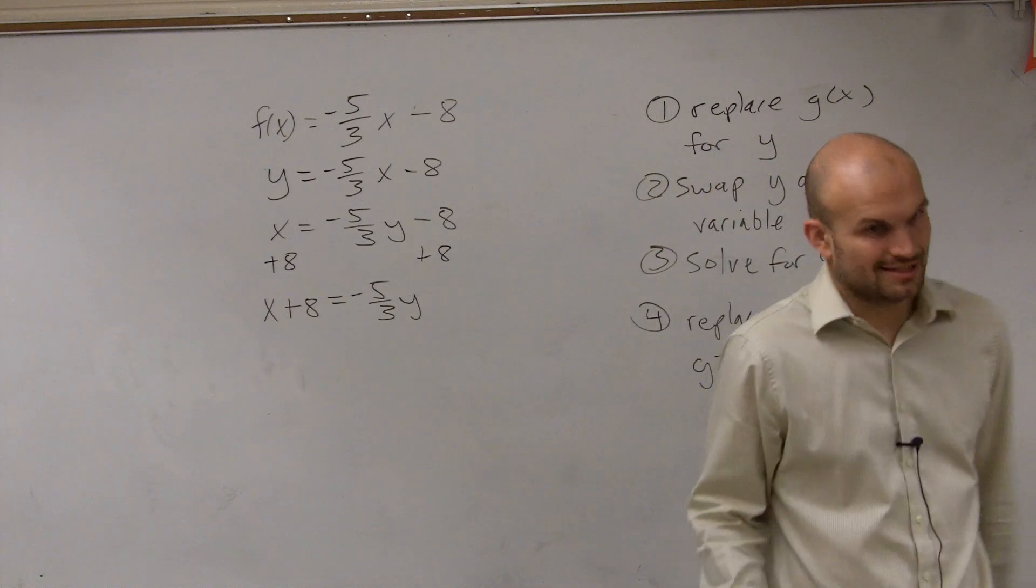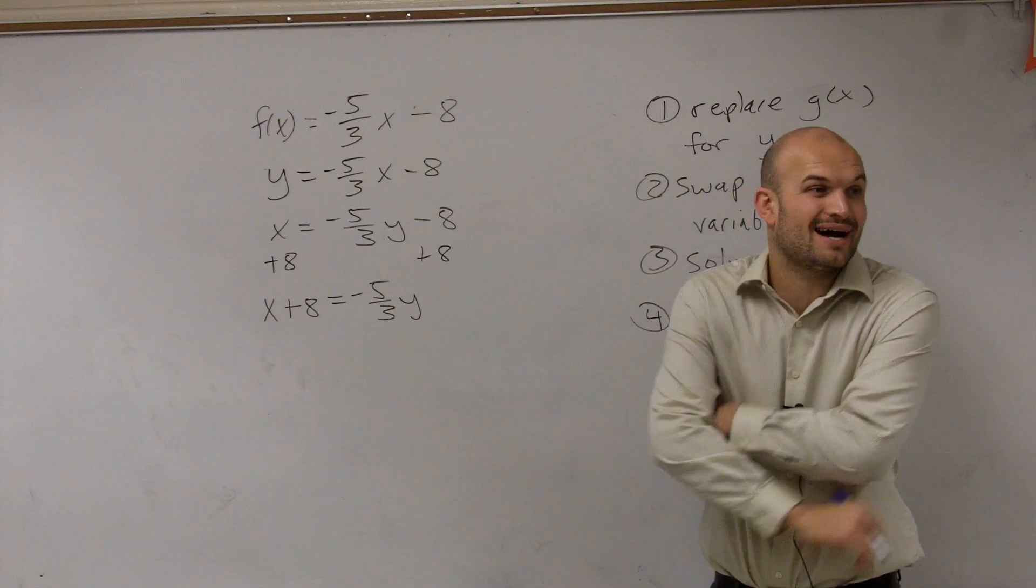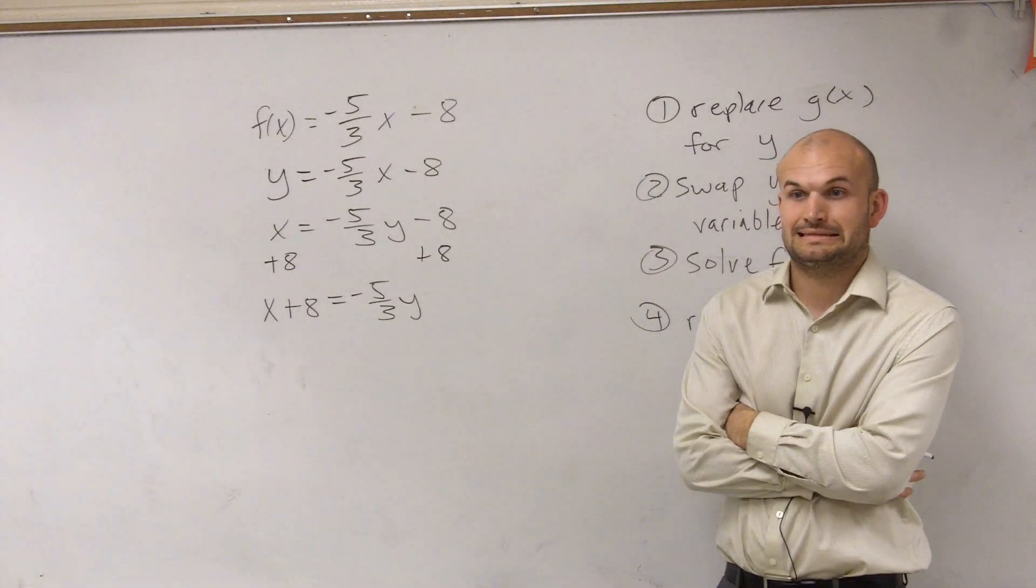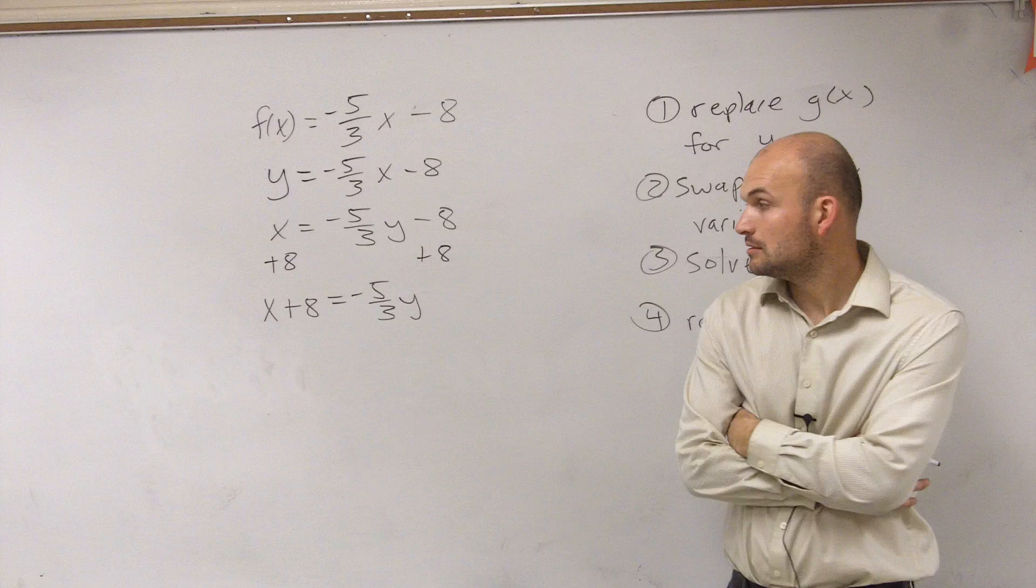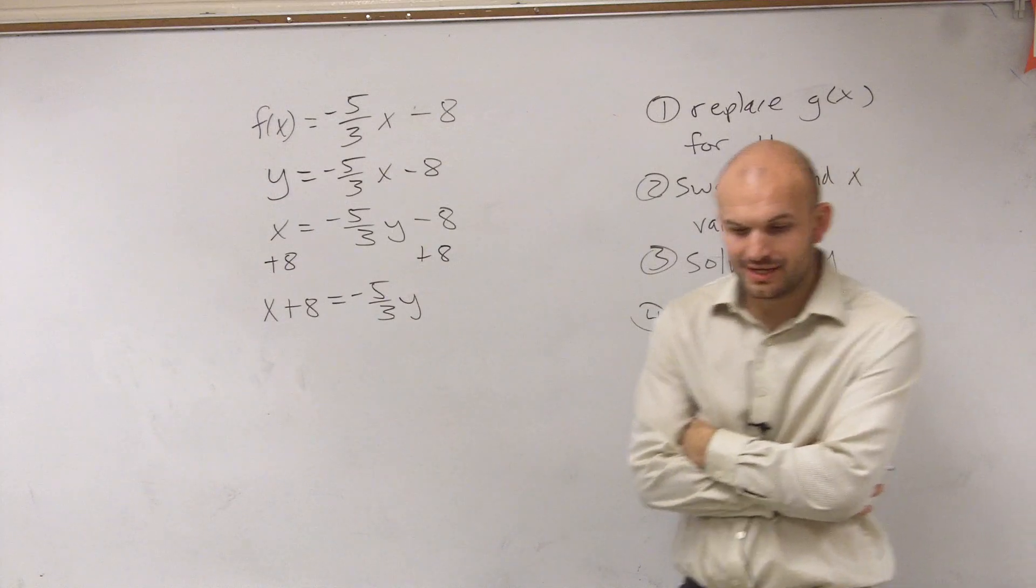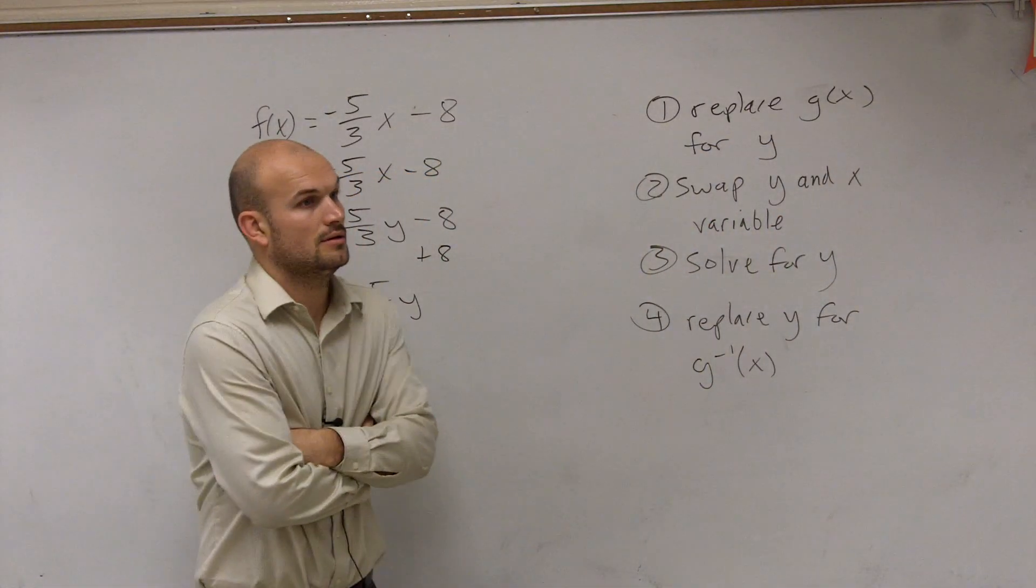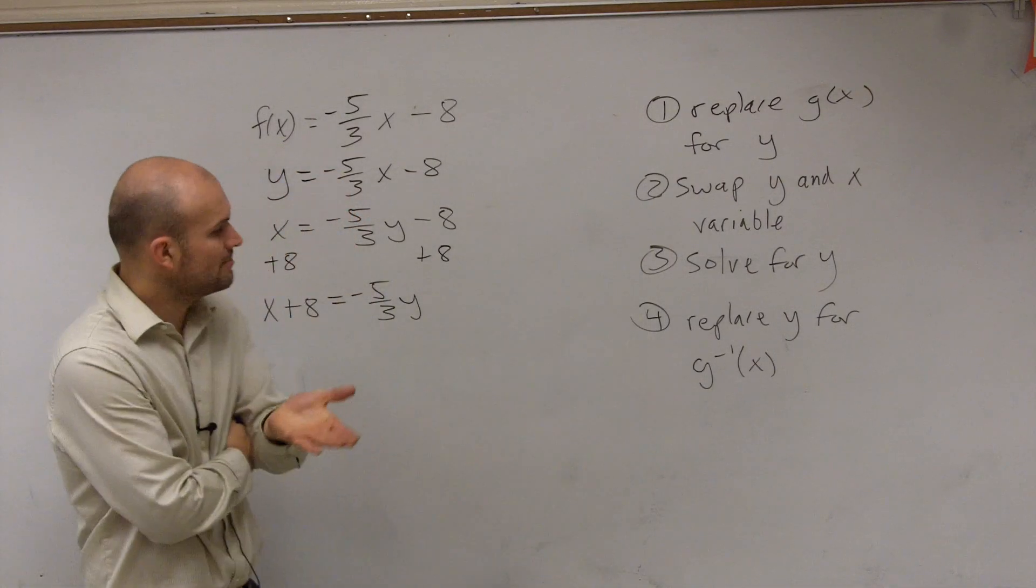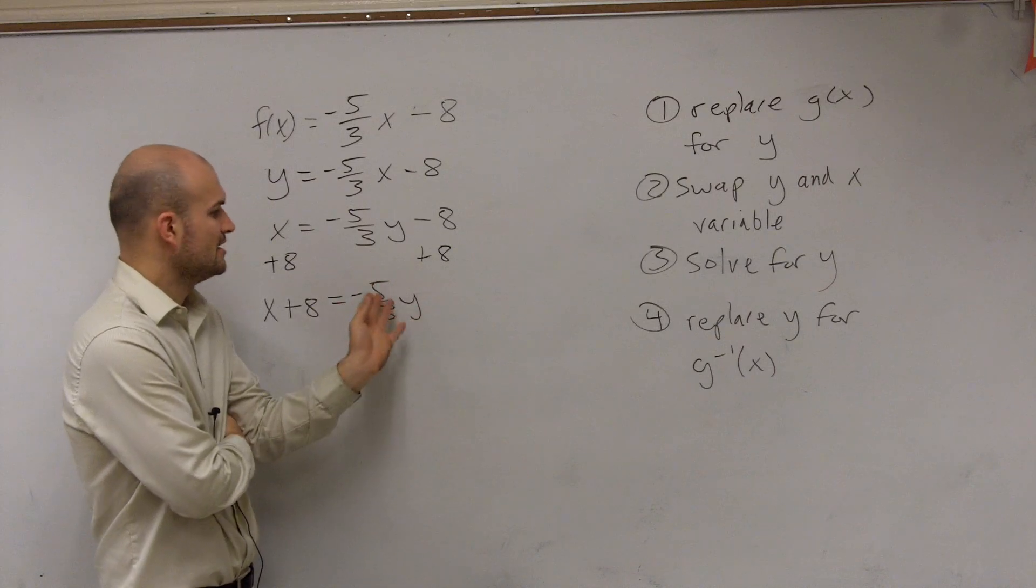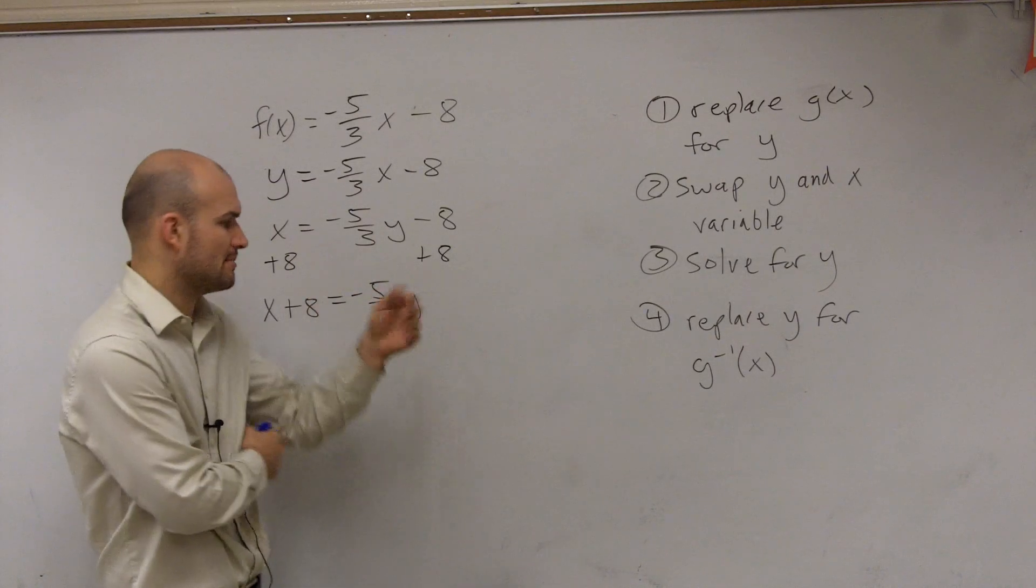Now we have a negative 5 thirds times y. Does anybody know how to get rid of that? So what is the reciprocal of negative 5 over 3? I would recommend multiplying it by the negative, just so the negative signs are going to make your y positive. You always want your y to be positive.